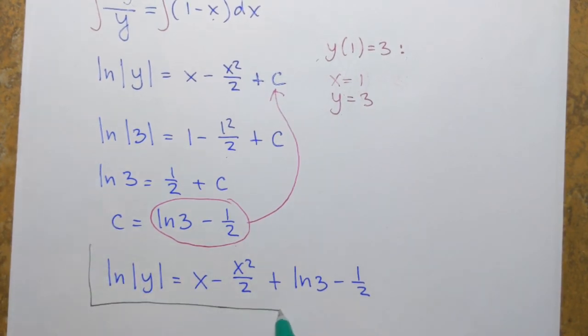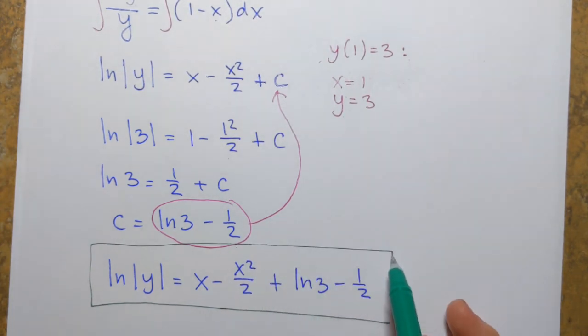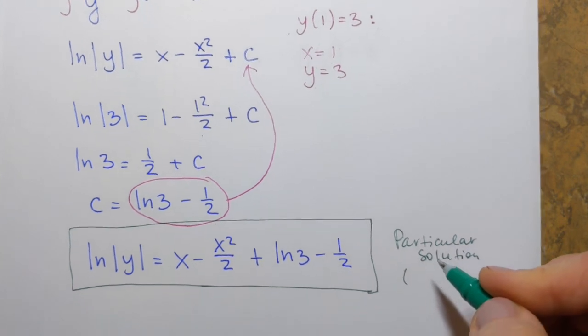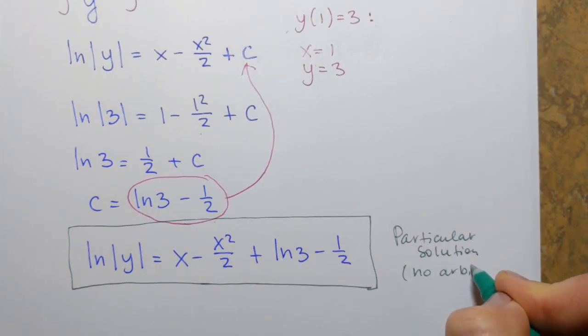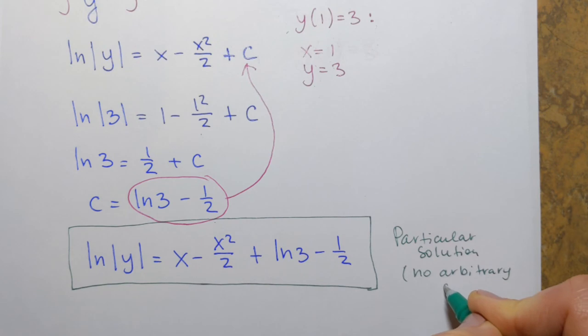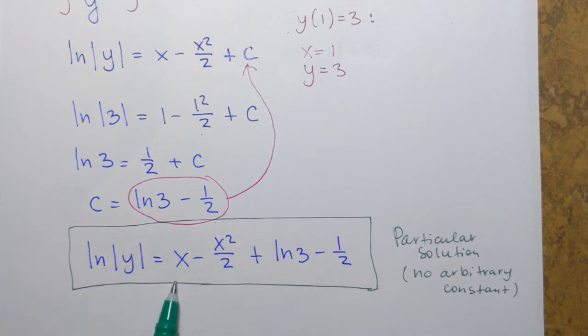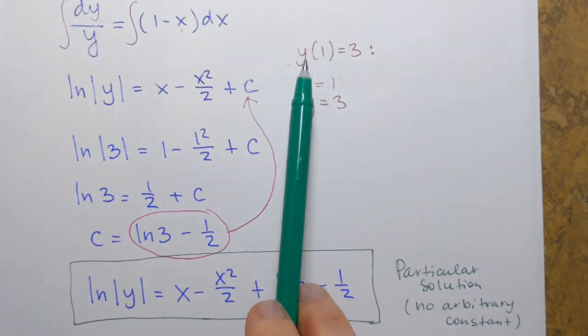...is always a specific function that does not involve arbitrary constant. This is called a particular solution. It has no arbitrary constant. And it's just the general name for this type of solution but in our case as we're solving this problem this is the solution to the initial value problem. Function that is solution to the differential equation and that satisfies this initial condition.